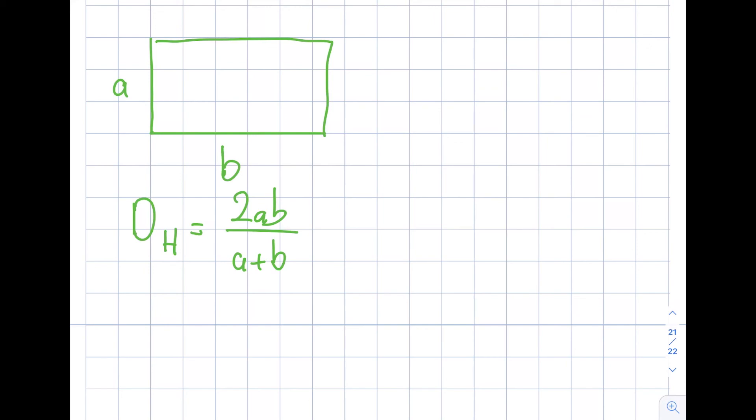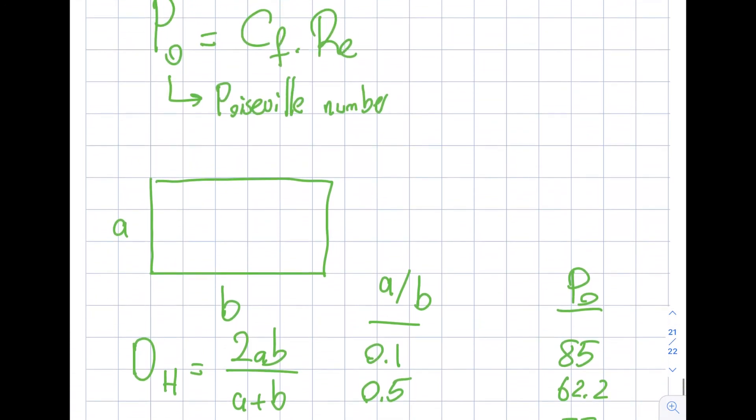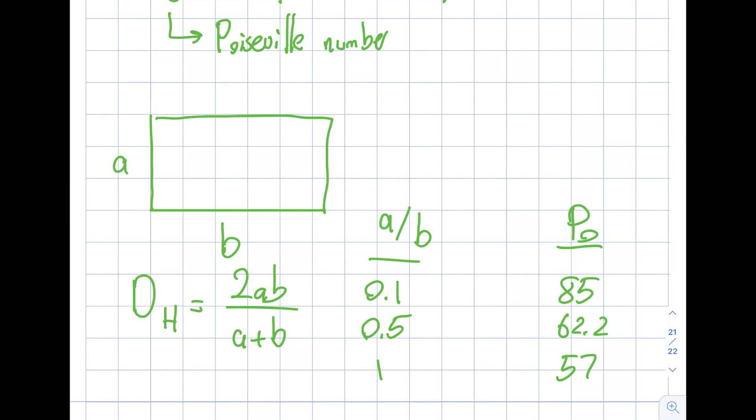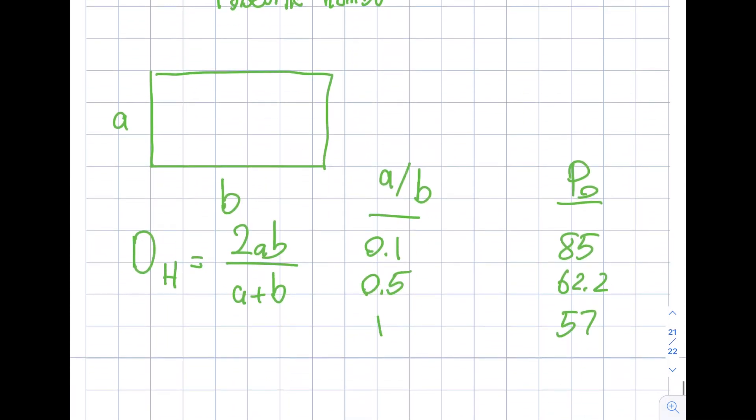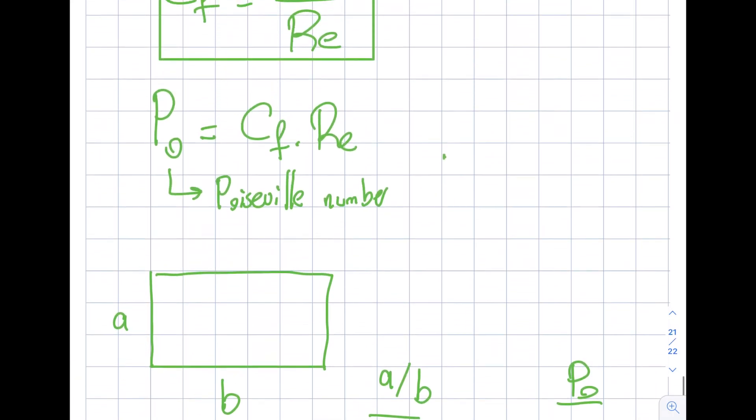But as a function of a over b, I can list my Poiseuille number. So let's say that this is 0.1, my Poiseuille number will be 85. If it's 0.5, I will be 62.2. And this is, let's say, 1, this is going to be 57. So now, rectangular cross-section over here, by simply replacing this value of 16 by these values, obviously, in many of the books, these are listed. So you can see there's also concentric analysis. I'm not looking at it in this particular class, undergraduate class. But basically, from here, you can do your analysis for a duct as if this is a circular section.